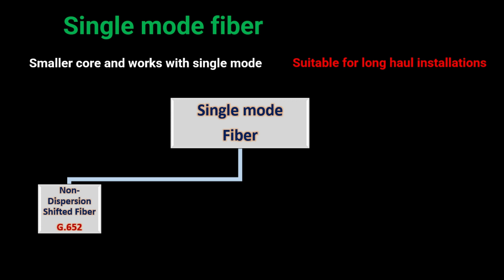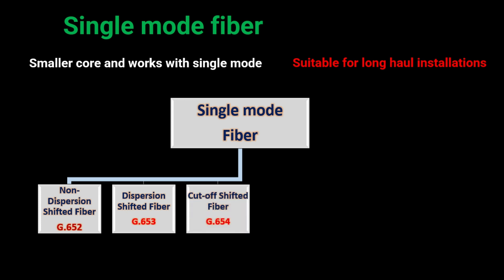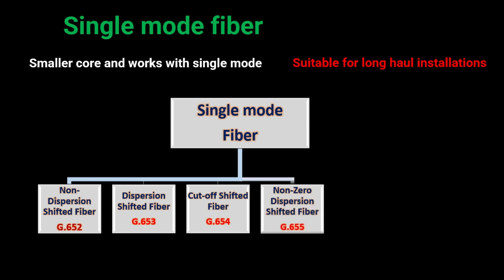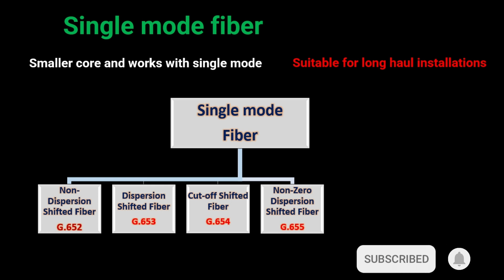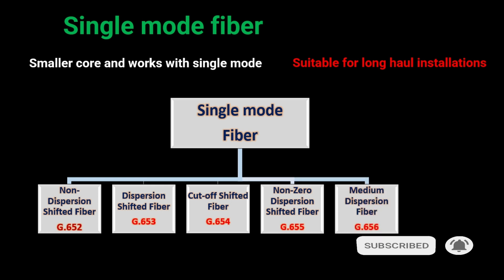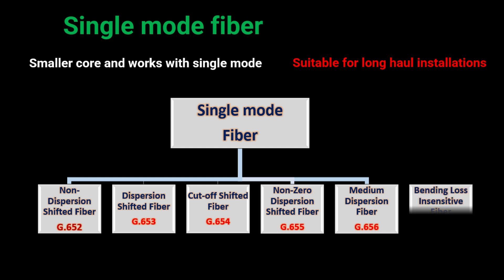First is non-dispersion shifted fiber, defined in ITU-T G.652. Dispersion shifted fiber is defined in G.653. Cut-off shifted fiber is defined in G.654. Non-zero-dispersion shifted fiber is defined in G.655. Medium dispersion fiber is defined in G.656. Bending loss insensitive fiber is defined in G.657.